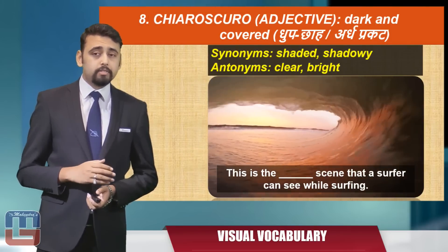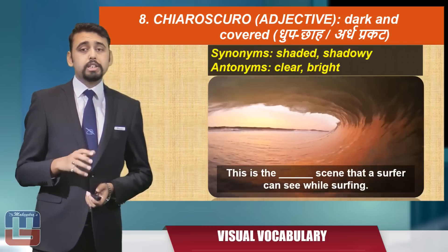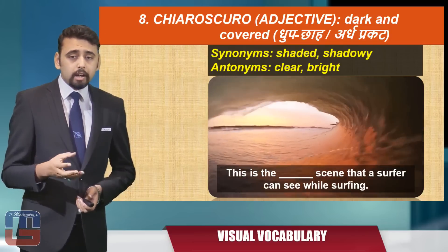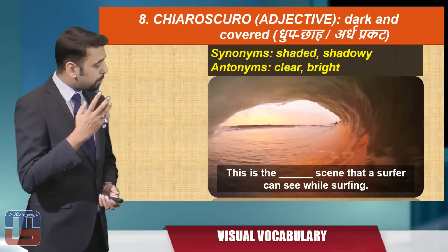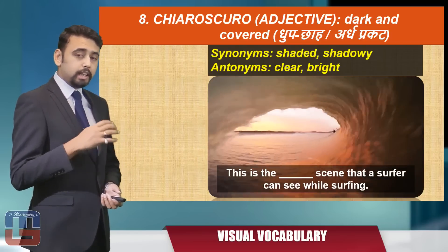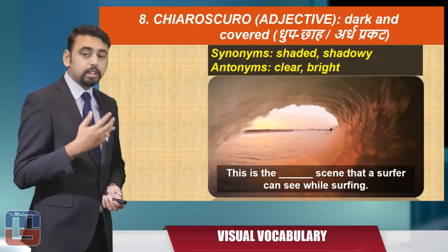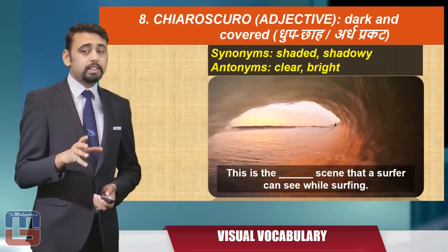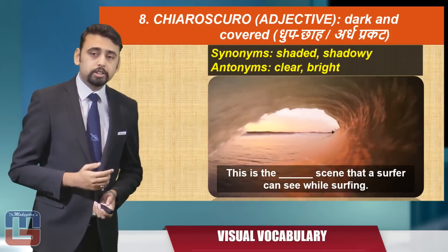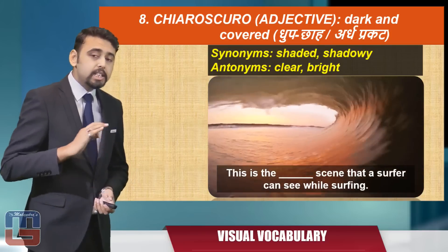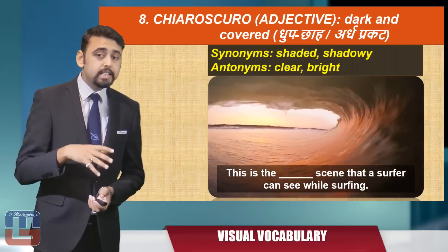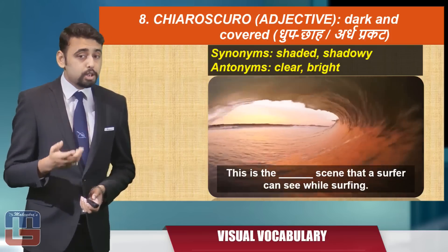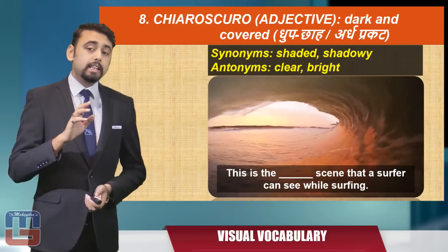Here's the next word: 'chiaroscuro.' Chiaroscuro is an adjective meaning dark and covered. The synonyms are 'shaded' or 'shadowy,' and the antonyms are 'clear' or 'bright.' A dark scenario is shown — the kind of scene a surfer can see with the naked eye while surfing. The sentence: 'This is the blank space scene that a surfer can see while surfing.' The answer: 'This is the chiaroscuro scene that a surfer can see while surfing.'